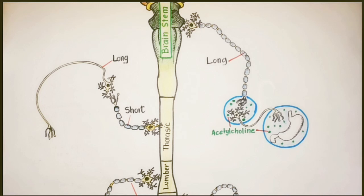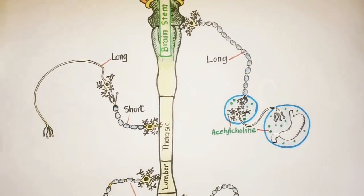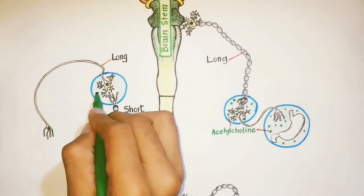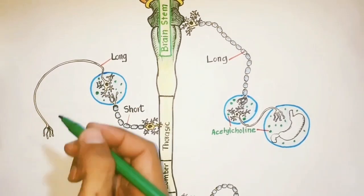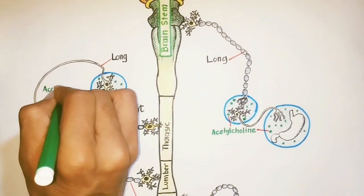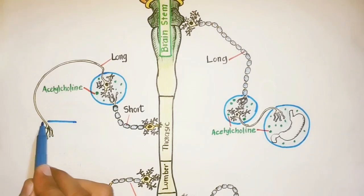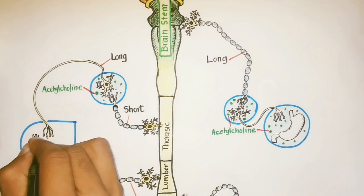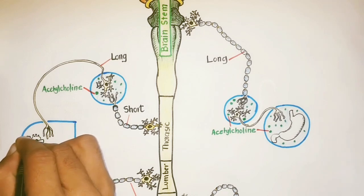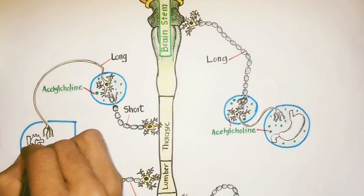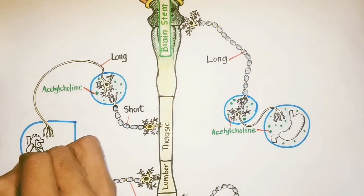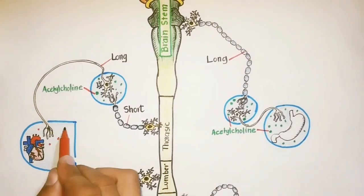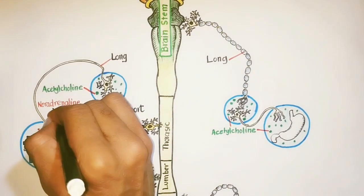Similarly, in case of sympathetic nervous system, in preganglia, we have the neurotransmitter acetylcholine as a signaling molecule. But without a few exceptions, all the postganglionic neurons of sympathetic division innervating the target organs, for example the heart here, secrete noradrenaline as a neurotransmitter.